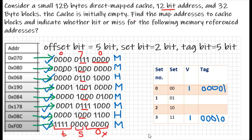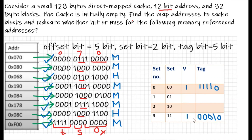On the miss, we update the tag to 11110. This completes the explanation for hit and miss in cache memory. The final cache state has sets 0 and 1 populated; sets 2 and 3 remain empty (V=0). The main goal was to determine hit or miss for each address. If you like the video, please like and subscribe.